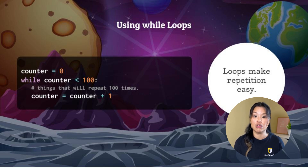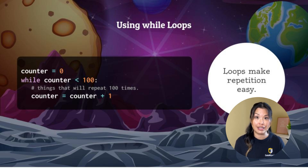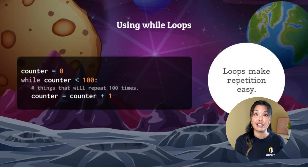Right now counter equals zero. So while counter is less than 100 — is zero less than 100? Yes, so the while loop is going to run and then it's going to increase the counter to one. So next time we do the loop, counter is going to be one — is one less than 100? Yes, so it's going to do the actions, all the way until counter gets to 100. If counter is 100, is counter less than 100? No — so that means the loop is no longer going to continue doing its action. It's going to stop because counter is no longer less than 100. And this is called a condition. So while this condition is true, we're going to run the code. If it's not true, no more while loop.